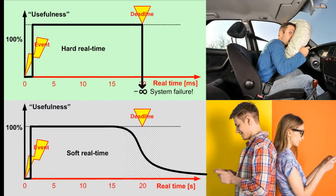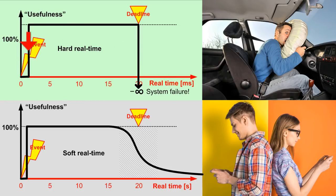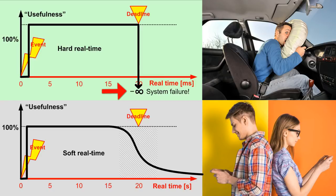Here is a graphical representation of the real-time usefulness of a computation as a function of time. In the so-called hard real-time systems, a computation is useful from the triggering event up to the deadline. After the deadline, the usefulness of the computation becomes negative infinity, which means that the computation is worse than useless. A missed deadline represents a system failure. For example, deploying an airbag too late is not just useless — it is disastrous.